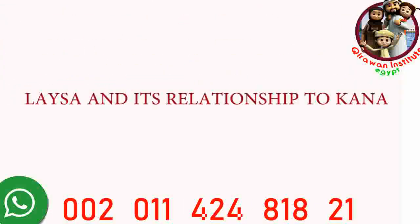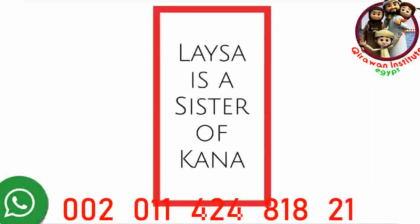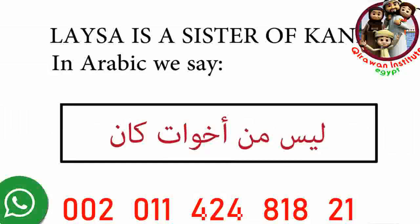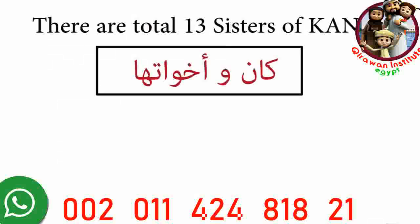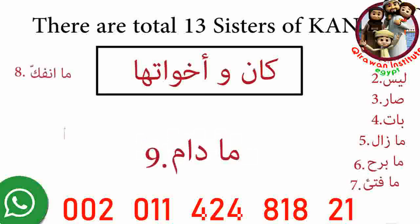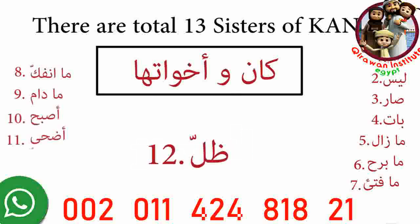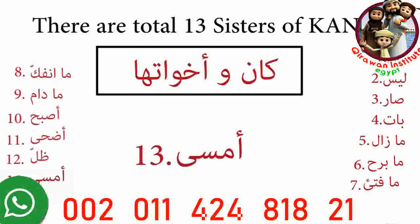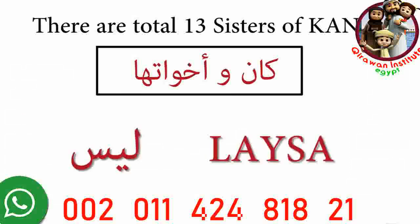In this lesson we're going to learn about leysa and its relationship to kana. Leysa is a sister of kana — in Arabic we say leysa min achawat kana. There are a total of 13 sisters of kana, including kana, leysa, and emsa. In this lesson we'll only be looking at leysa and how it's affected by its relationship to kana. The other sisters of kana will be addressed at a different time.